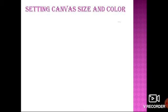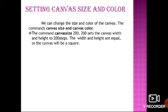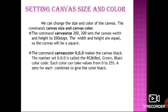Next, we have setting canvas size and color. We can change the size and color of the canvas using commands. The command Canvas Size 200 200 sets the canvas width and height both to 200 steps — since height and width are equal, the canvas becomes a square. Similarly, the command Canvas Color 0 0 0 makes the canvas black. The color code is called RGB — Red, Green, Blue — where each color can take values from 0 to 255. A value of 0 for each combines to give the color black.